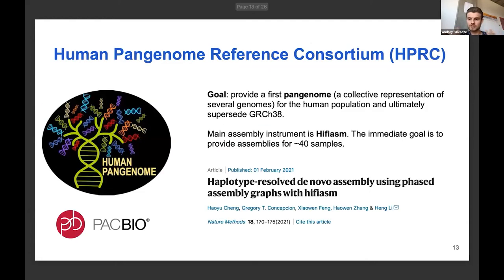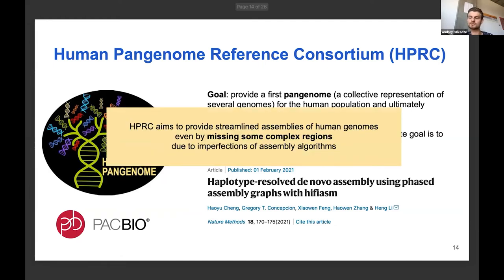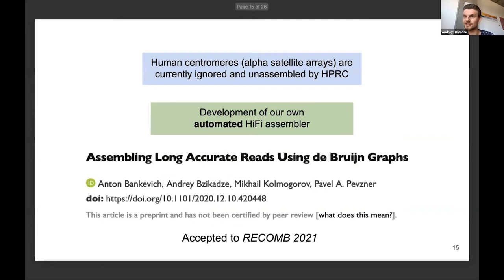The Pangenome Reference Consortium aims to generate a collective representation of several genomes to capture human diversity. Because they are more interested in streamlined assemblies, they sometimes do not focus on assembling very complex regions like centromeres. We, on the other hand, specifically care about these regions, and we are developing our own assembler for HiFi reads — a preprint is available and it was recently accepted to RECOMB 2021.